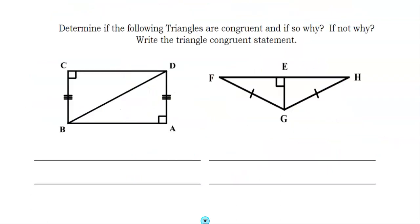Determine if the following triangles are congruent. If so, why? If not, why? Write the triangle's congruent statement. So I see 90 degree angles. I see the sides. And then, well, this is my hypotenuse. Bada bing. So therefore I can prove H-L.